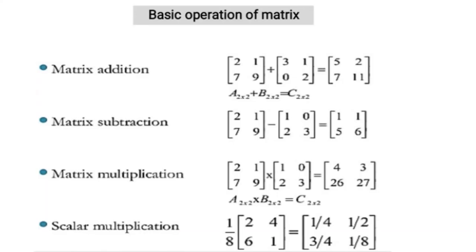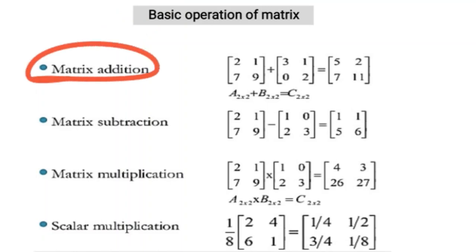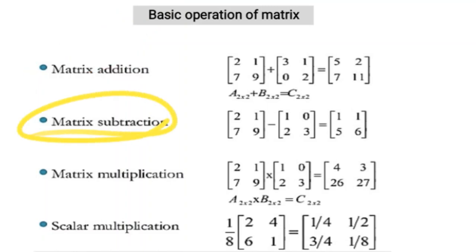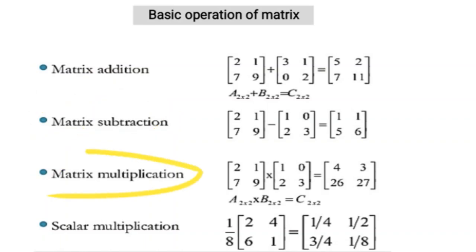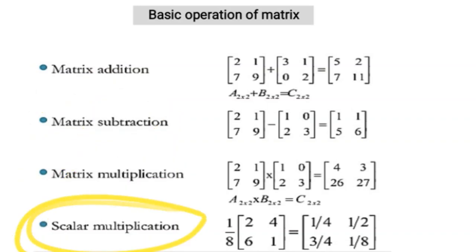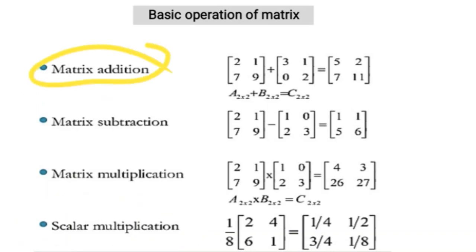These are the basic operations of the matrix. The first is matrix addition, the second is matrix subtraction, the third is matrix multiplication, and the fourth is scalar multiplication. So let's see matrix addition.